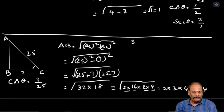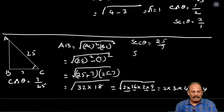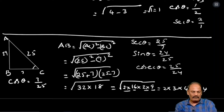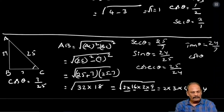Now we need the other functions. Secant theta: reverse to the cos, that is 25 by 7. Sin theta: opposite by hypotenuse, 24 by 25. Cosecant theta: reverse to the sin, 25 by 24. Tan theta: 24 by 7. Cot theta: reverse to the tan, 7 by 24. One more sum is over.